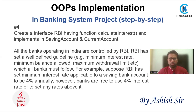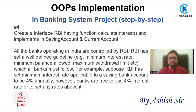In the fourth step, we are going to create the RBI interface. The RBI interface will provide 100 percent abstraction in Java, as interfaces are used when you want 100 percent abstraction. The RBI interface will have a calculate interest method, and that method will be implemented in SavingAccount and CurrentAccount — so the classes will be: class SavingAccount implements RBI and class CurrentAccount implements RBI.